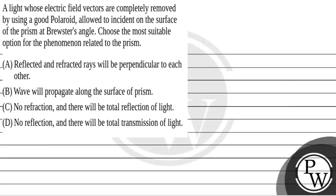Hello, let's see the question. The question given is: a light whose electric field vectors are completely removed by using a good polaroid, allowed to incident on the surface of the prism at Brewster's angle.